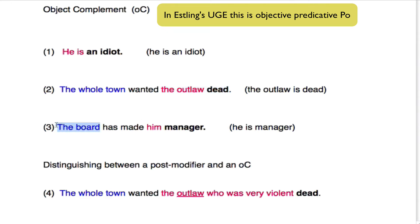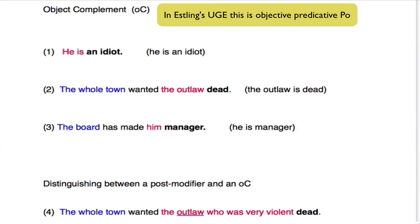Let's look at three. The board — this is the subject — has made, this is the predicator, him. Somebody has made him. Now we've got this word which we have to account for: manager. In this case, he has changed — he has changed from becoming just an employee to becoming a manager. So because of the action of the board, he has been changed into a manager. So manager here is the object compliment. There are a limited number of verbs — the lexical verb — which have this object compliment pattern.